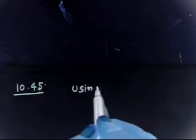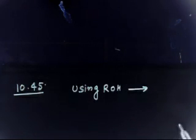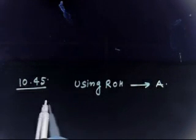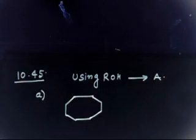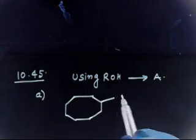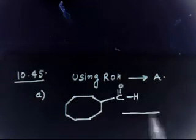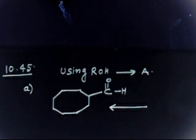Let us discuss problem 10.45. This is an easy problem. The question says: how do you prepare the following compounds using the alcohol of your choice? So using ROH, you have to prepare some compound. For part A, you have to prepare an eight-membered ring compound with a CHO group. How can you prepare this compound using an alcohol?